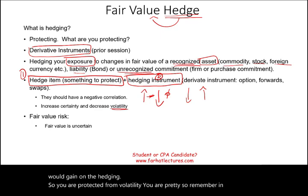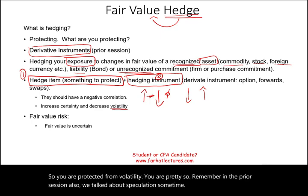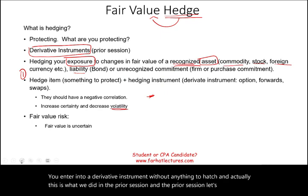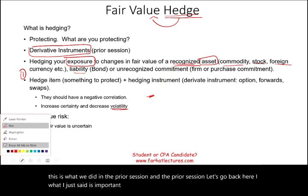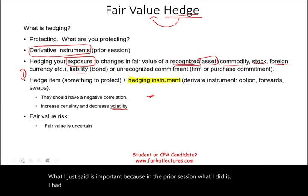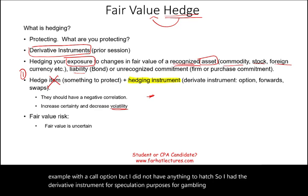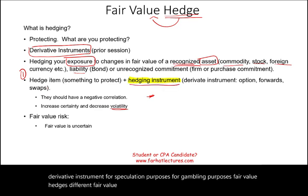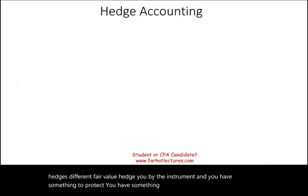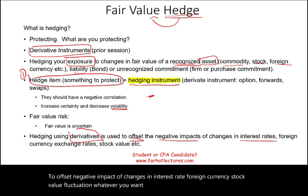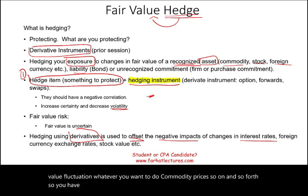In the prior session we talked about speculation — sometimes you enter into a derivative instrument without anything to hedge. In the prior session I had a hedging instrument — a call option — but I did not have anything to hedge, so it was for speculation purposes. Fair value hedge is different: you buy the instrument and you have something to protect. In a nutshell, hedging means using derivatives to offset the negative impact of changes in interest rate, foreign currency, stock value fluctuation, or commodity prices.